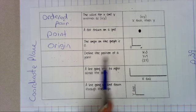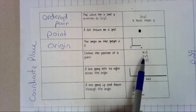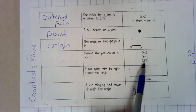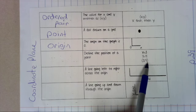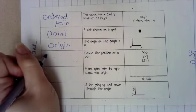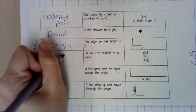Define the position of a point. So when you actually put numbers to an ordered pair, when you put 3, 4, X is 3, Y is 4, that is called coordinates.